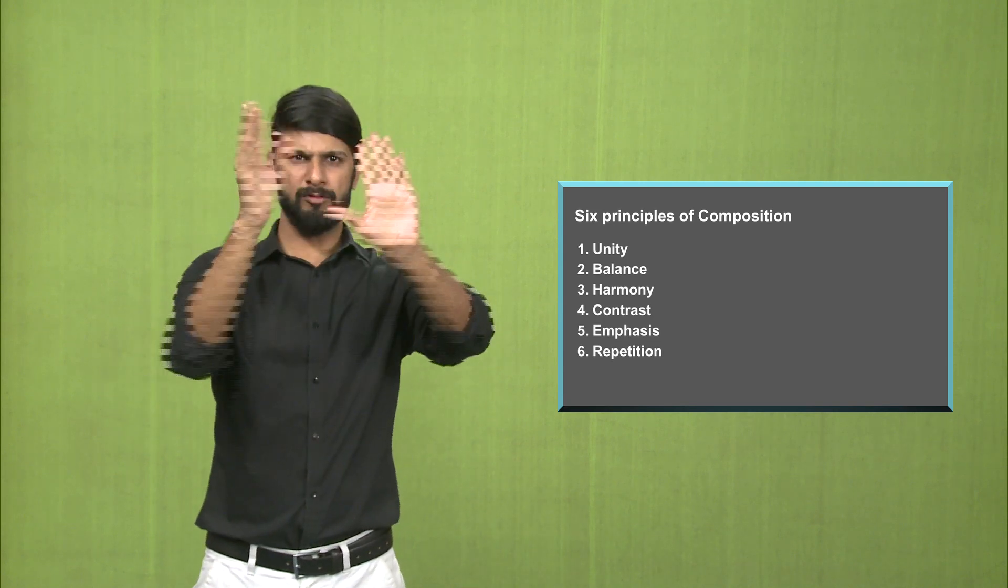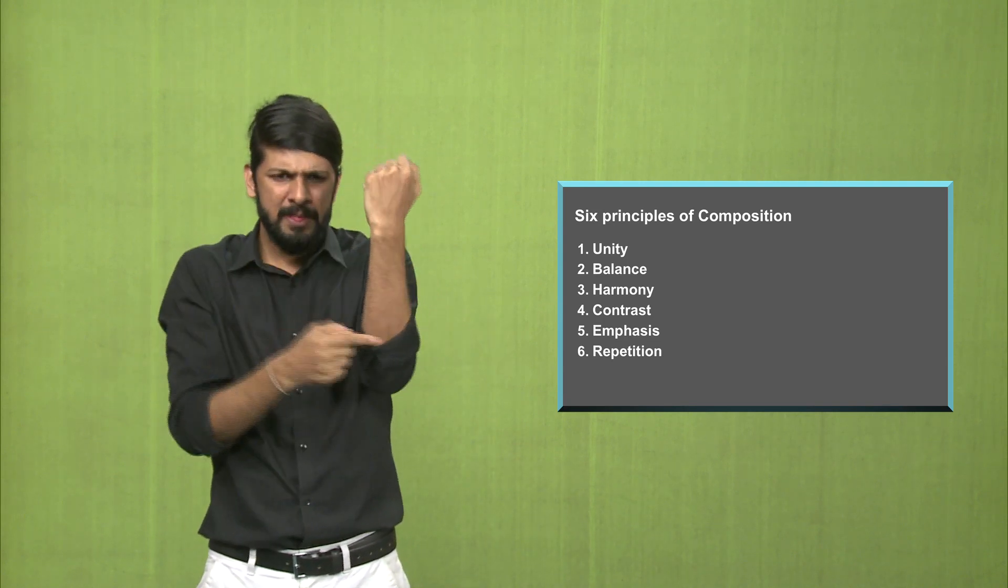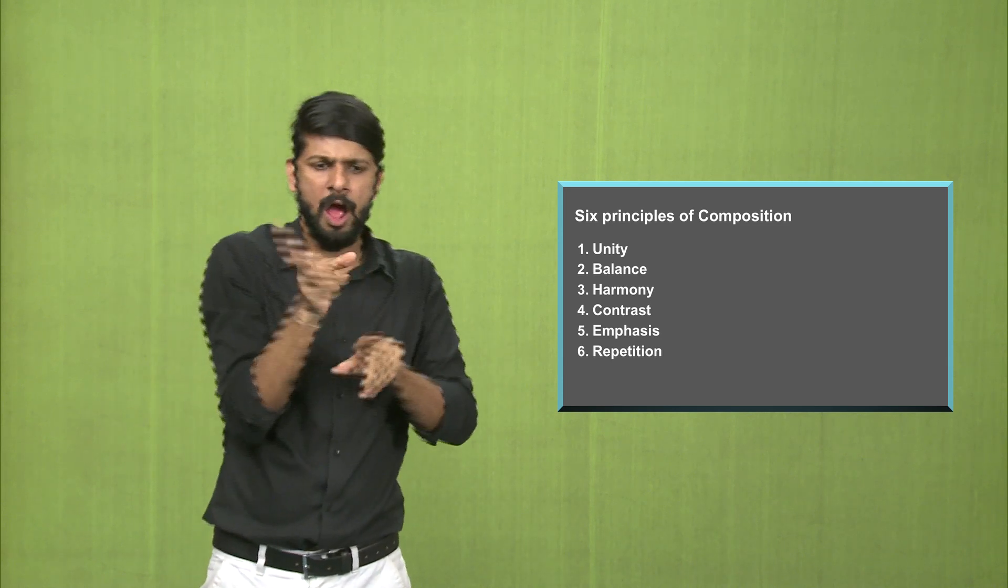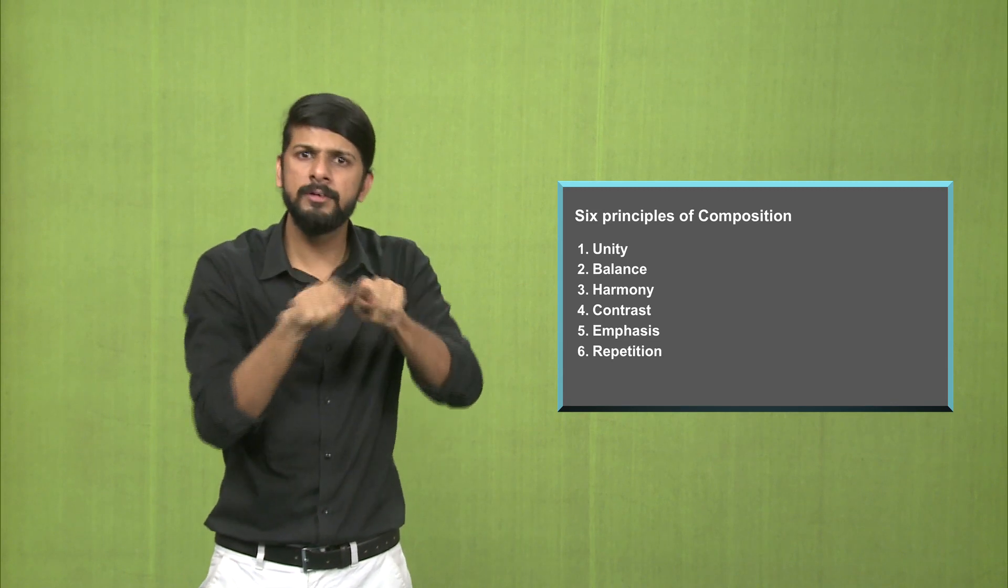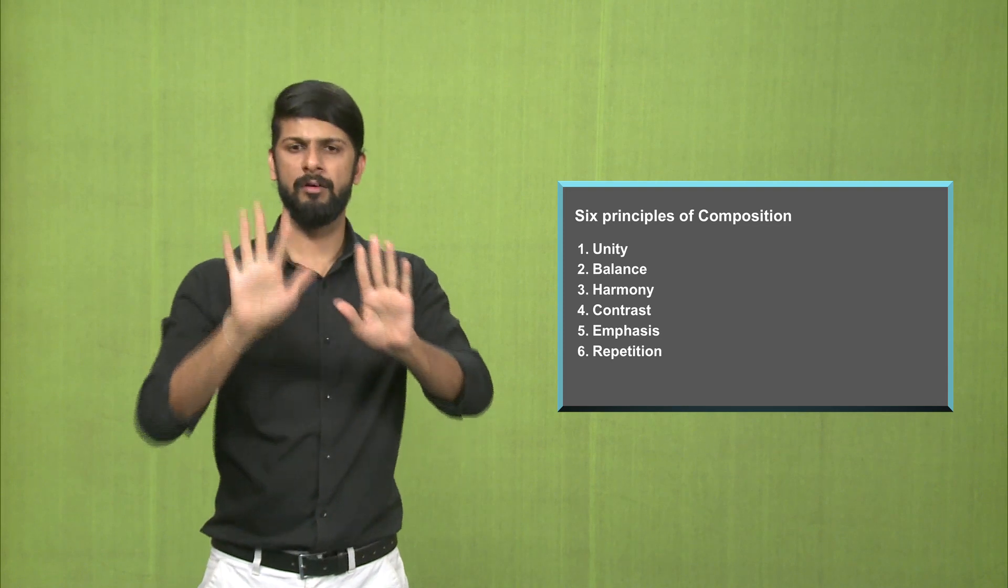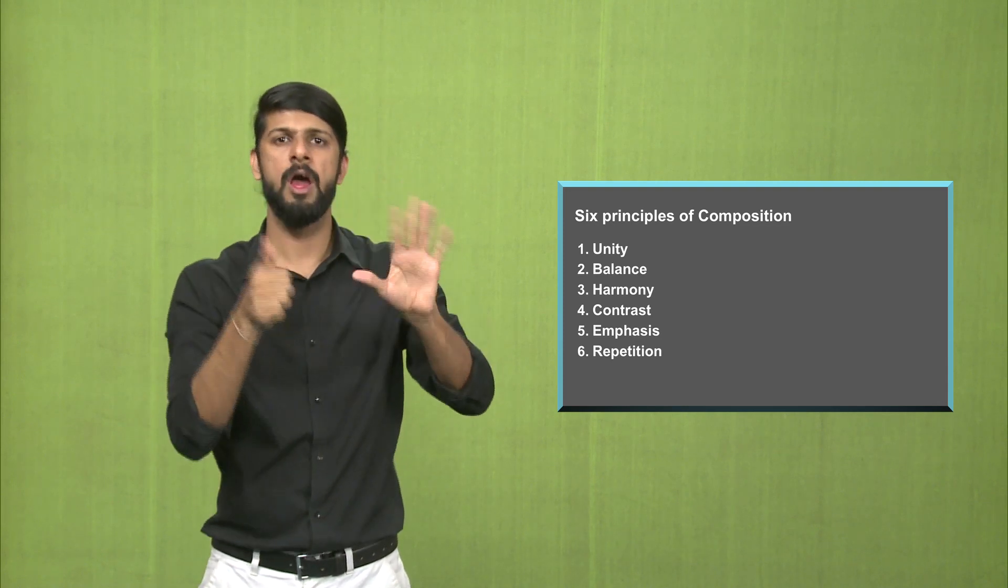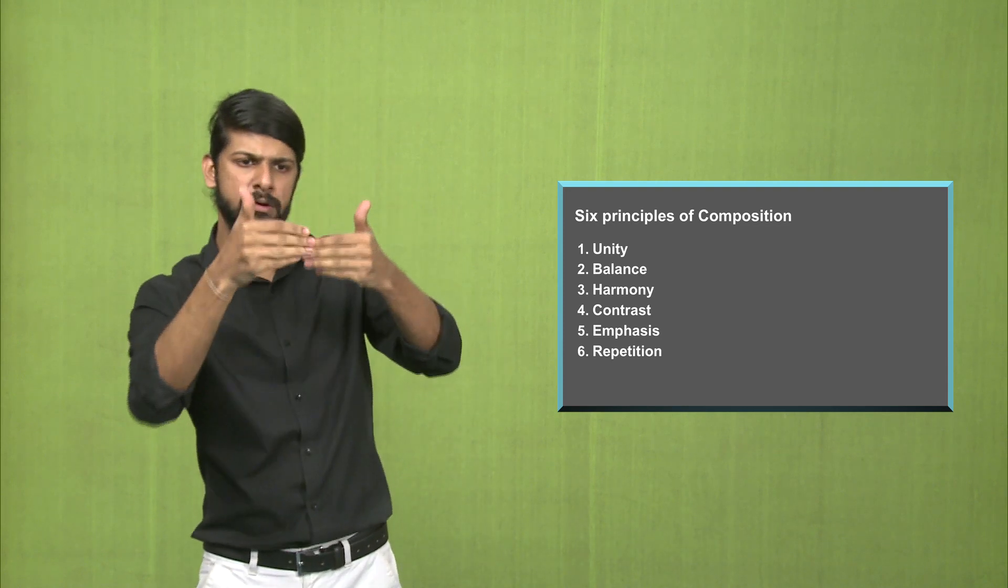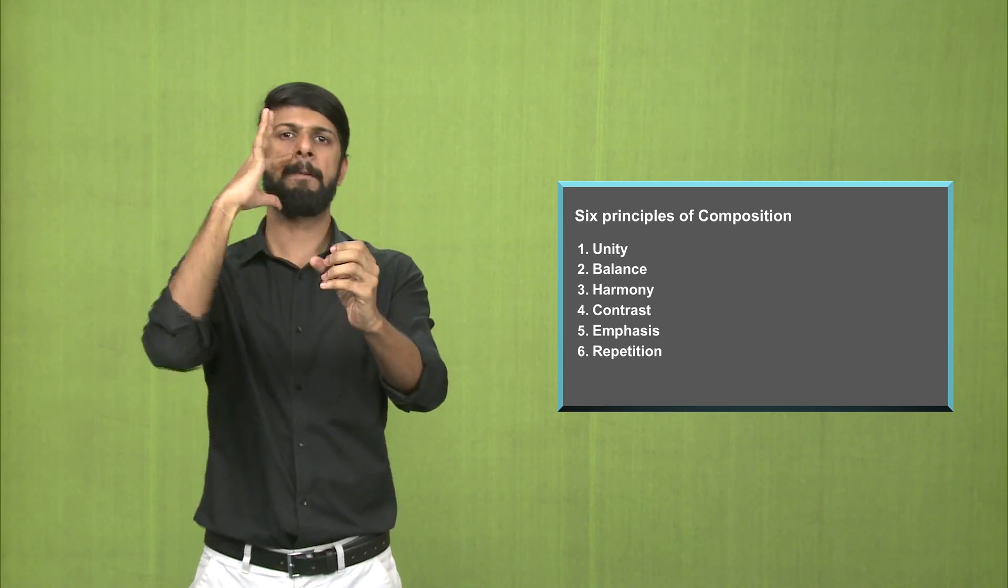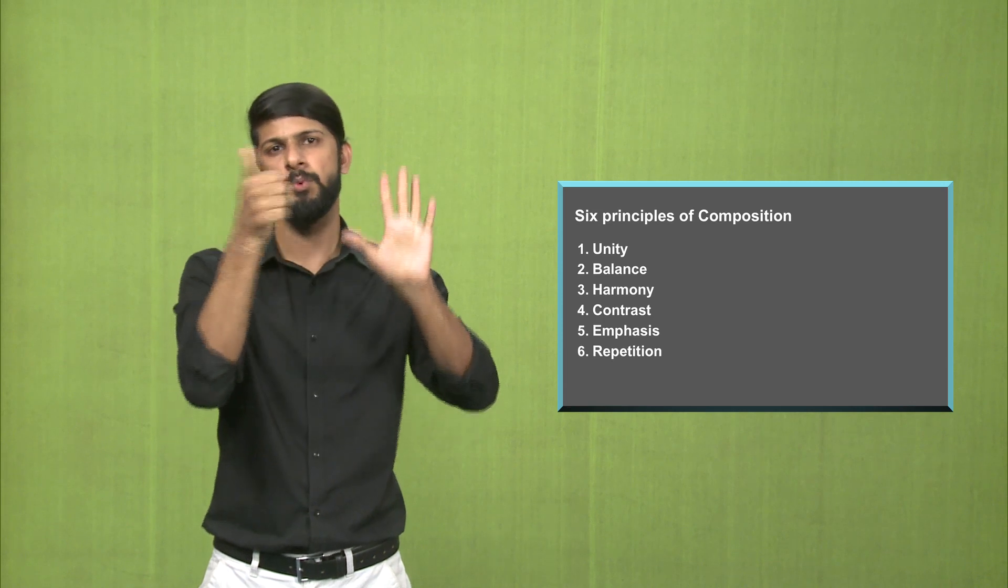And then we have repetition. Repetition is as you see the border, the lower border, the flower motif has been repeated. That is called repetition. These are the six principles of composition: unity, balance, harmony, contrast, emphasis and repetition.